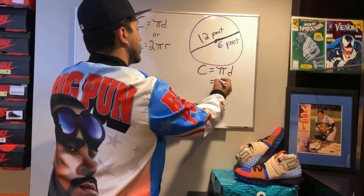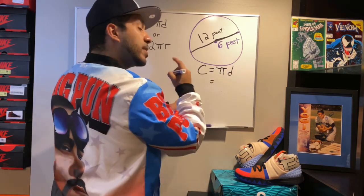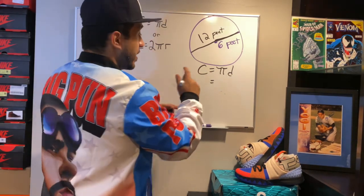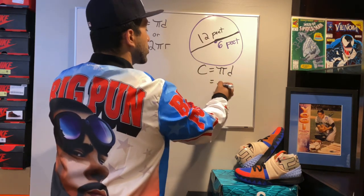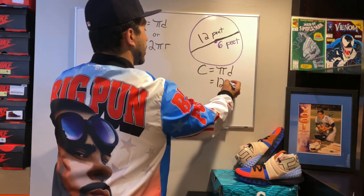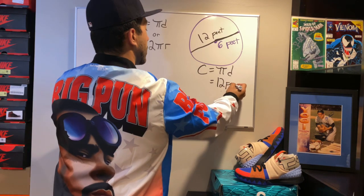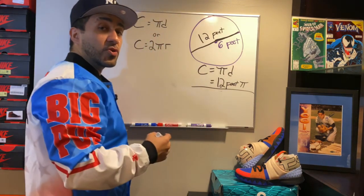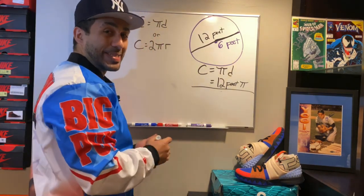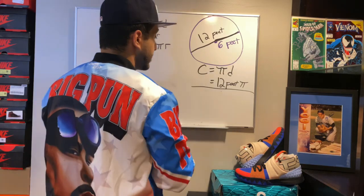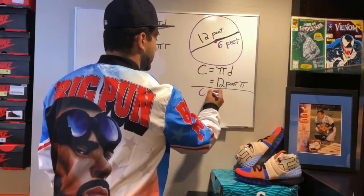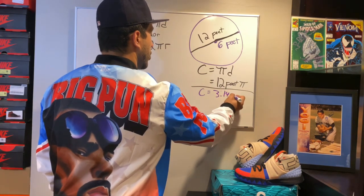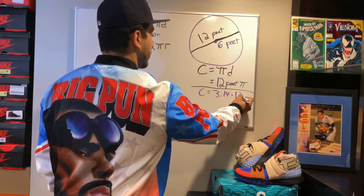Now, it actually depends — sometimes they might ask you to leave it in the form of pi. If they ask you to do that, then the circumference will be 12π feet. They may also ask you to use 3.14, which is the estimate of pi. In that instance, I would rewrite: circumference equals 3.14 multiplied by the diameter of 12 feet.